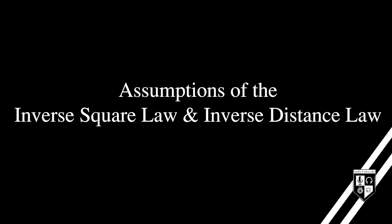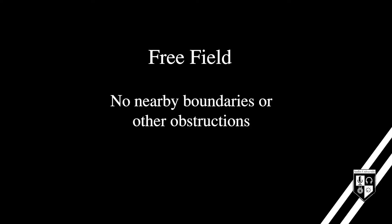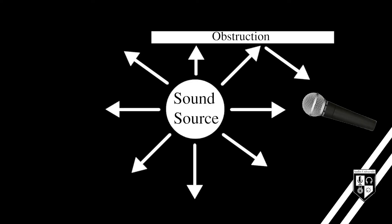While the inverse square law and inverse distance law are useful tools for solving real-world problems, the simple relationships shown in this video assume theoretical conditions. The first assumption is an omnidirectional point source — a sound source that radiates sound evenly in all directions. The second assumption is a free field condition, in which there are no nearby boundaries or obstructions. A nearby obstruction could provide a reflection, causing less loss over distance than either law would predict.